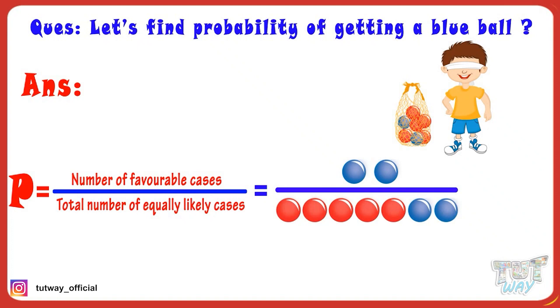So probability for getting a blue ball is two by seven.